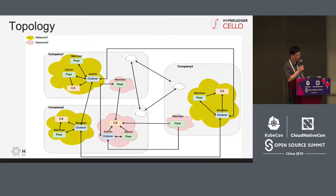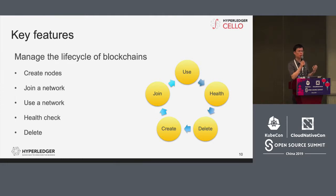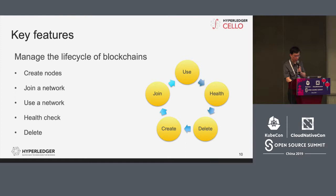The distributed management can compose an integrated network. Cello has five major features: it helps create nodes within the physical resources; after creating blockchain nodes, they can join a network, meaning each organization's nodes join the network one by one to form an alliance structure. Users can then use blockchain applications and the Fabric API. It also provides health checks to monitor system operation, and nodes can be deleted if necessary — this is the lifecycle management of the blockchain.